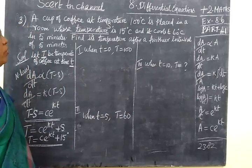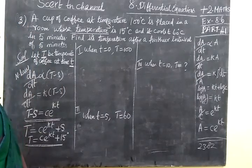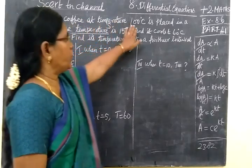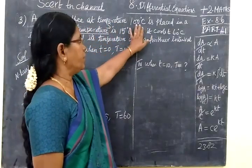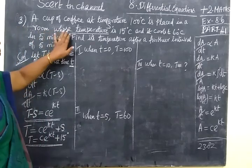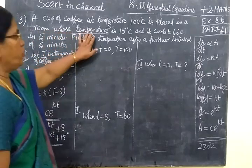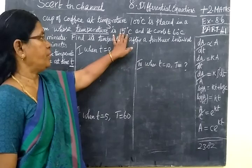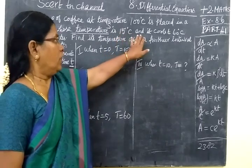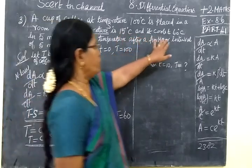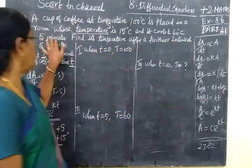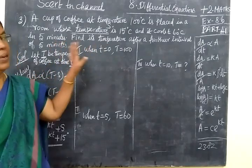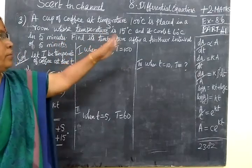A cup of coffee at temperature 100 degrees is placed in a room whose room temperature is 15 degrees. It cools to 60 degrees after 5 minutes.